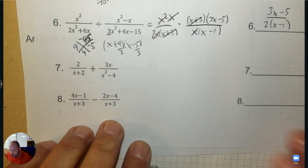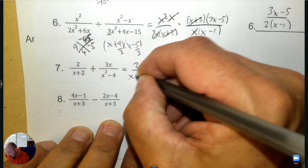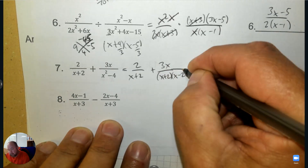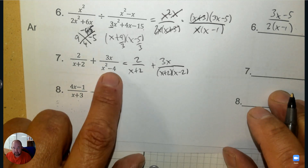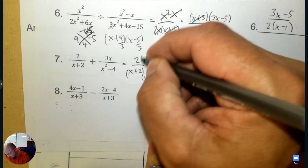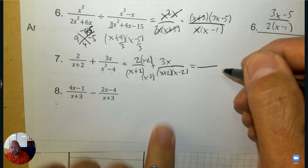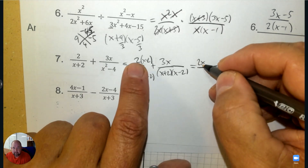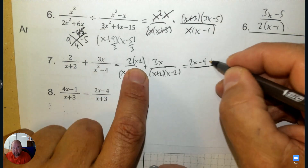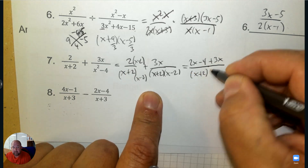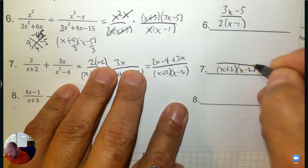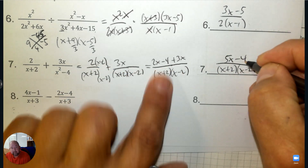Number 7, we're adding. To add, we need common denominators. So I'm going to factor the second denominator — it's a difference of squares: square root of x squared and square root of 4, giving (x plus 2)(x minus 2). Now I can see what I'm missing — multiply top and bottom by (x minus 2). So 2 times x and 2 times negative 2. We still have plus 3x over here, but now we have common denominators. So we just add like terms — the common denominator for our answer, add 2x plus 3x and we have our answer.